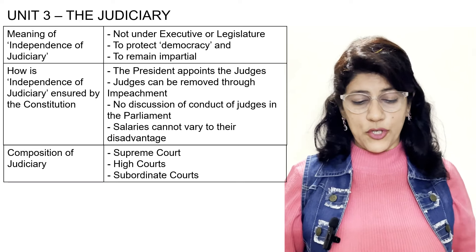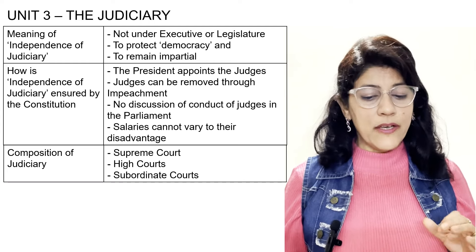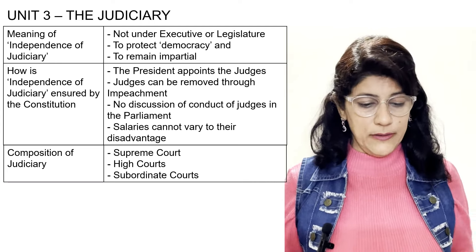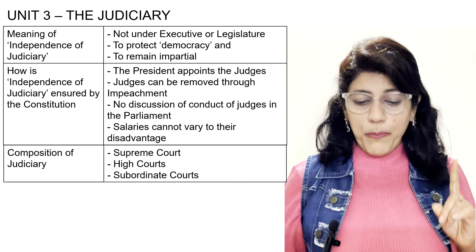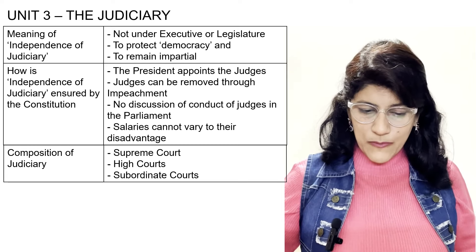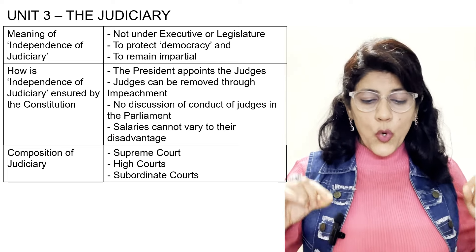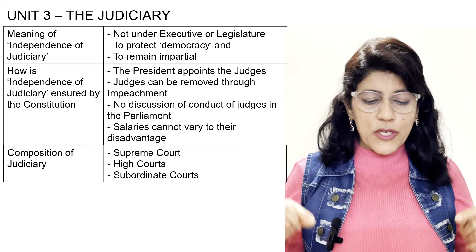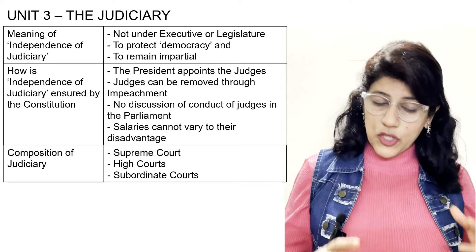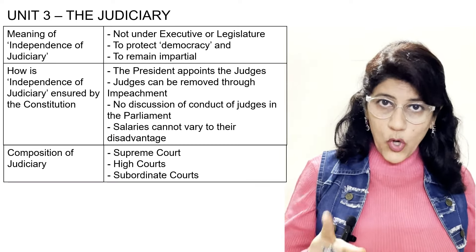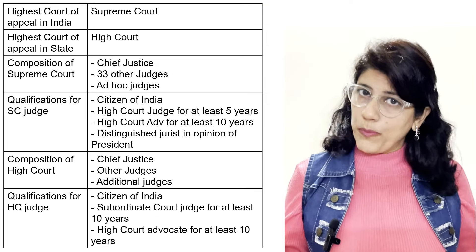Moving to the last chapter — Judiciary. Meaning of independence of judiciary: not under the executive or legislature, to protect democracy, and to remain impartial. How is independence of judiciary ensured? The President appoints the judges, judges can be removed only through the very difficult process of impeachment, there is no discussion of conduct of judges in Parliament, and salaries cannot vary to their disadvantage. Composition of judiciary: Supreme Court, High Court, and subordinate courts. Highest court of appeal in India: Supreme Court. Highest court of appeal in a state: High Court.